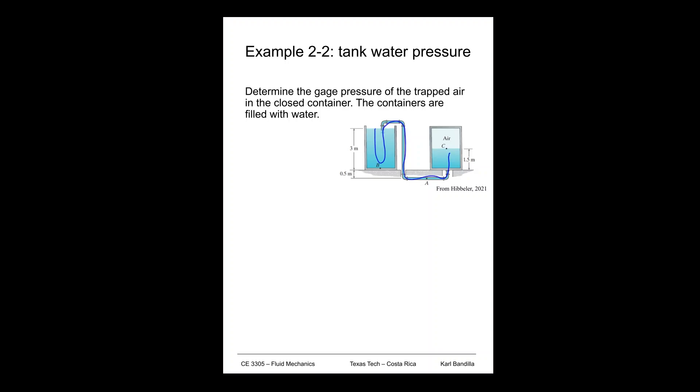So we can start at Pb. We know at the top up here we have gauge pressure equal to zero. We can start with that, so we can say Pb is just going to be three meters, that's the depth, times gamma water. And we'll leave it as that. We're not going to do all the calculations until the end.